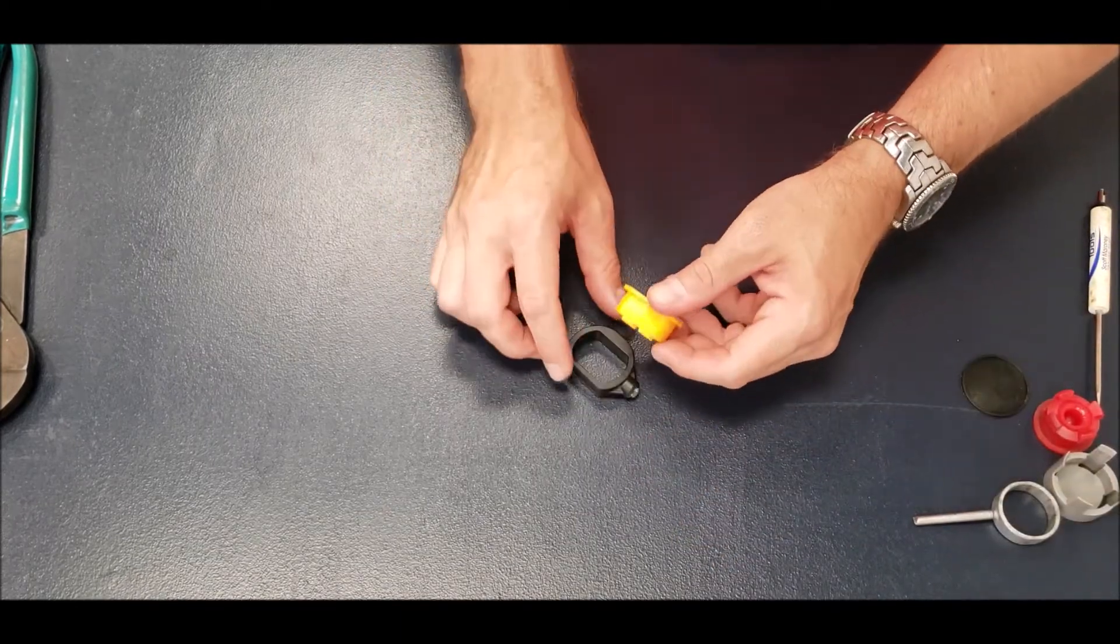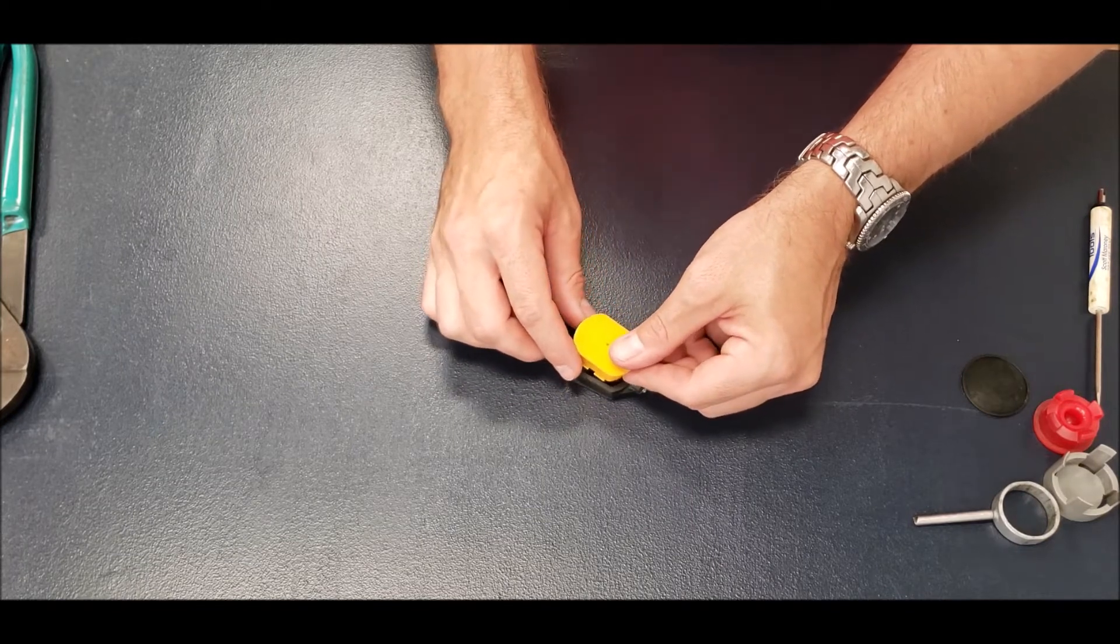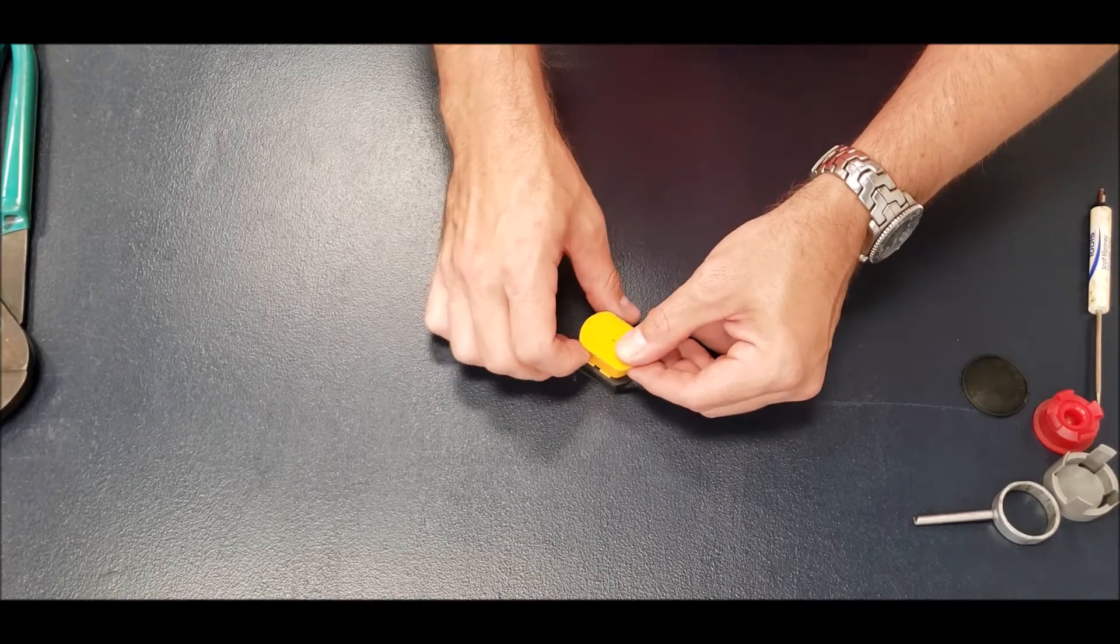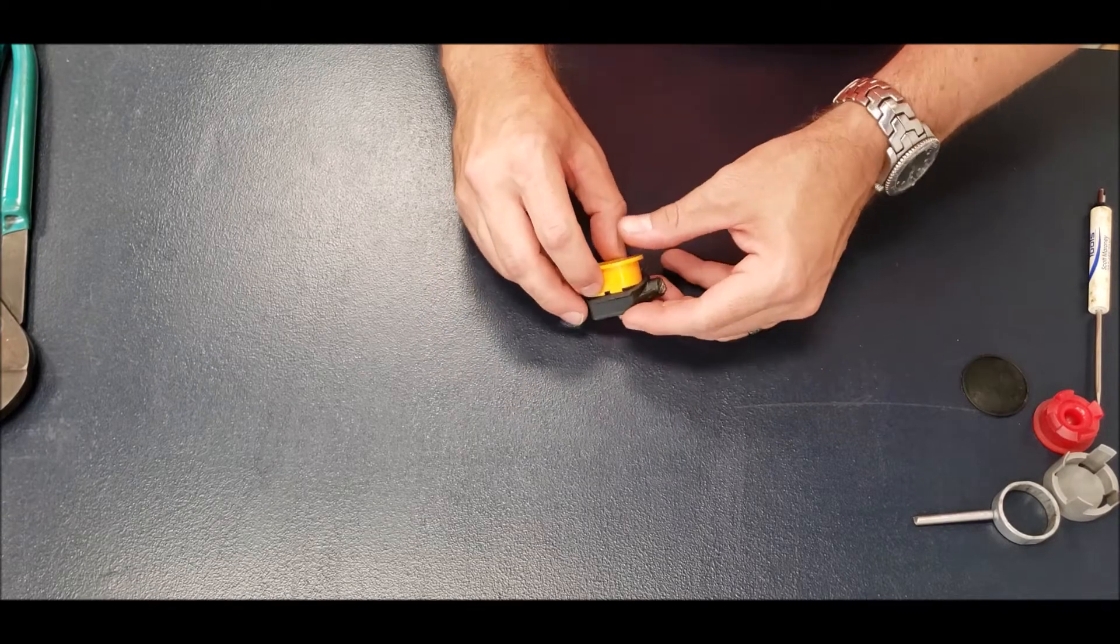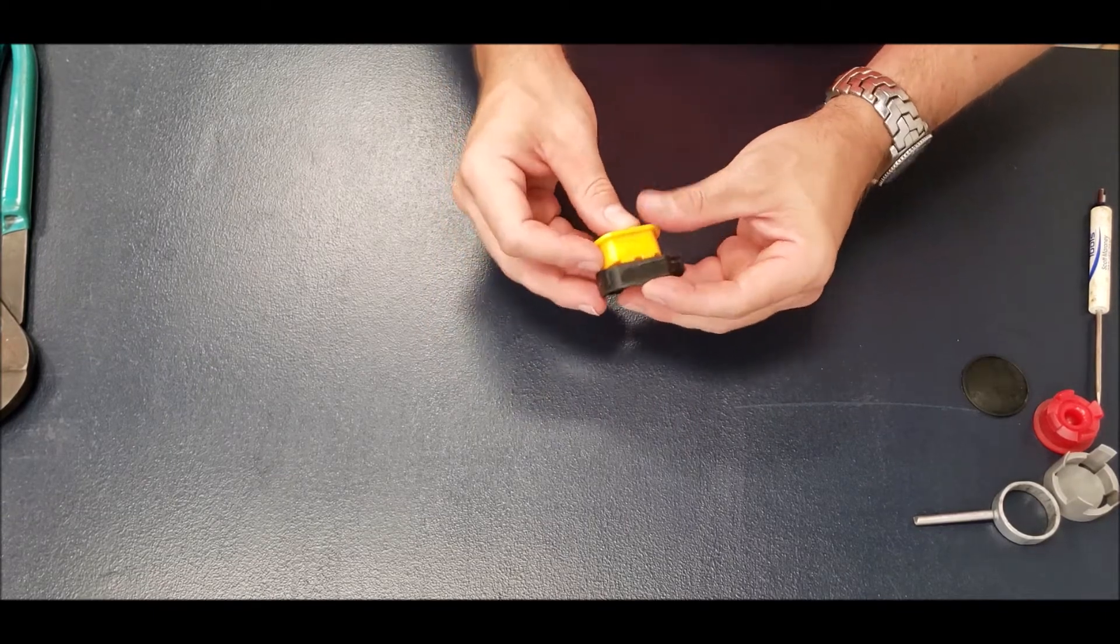If you've got the oblong cable, this one presses in pretty easily once you've got the old bushing out. You just put it in, not quite straight, at a slight angle.